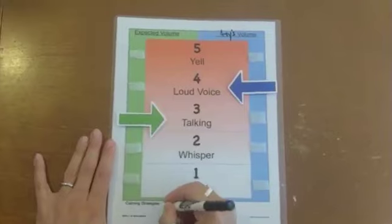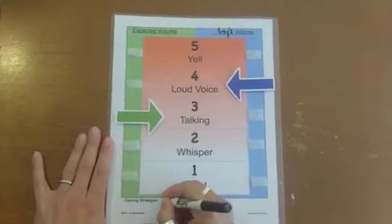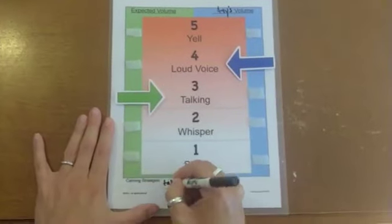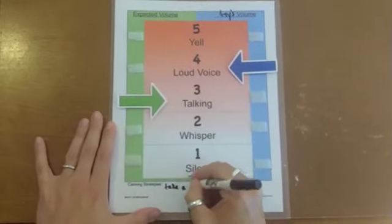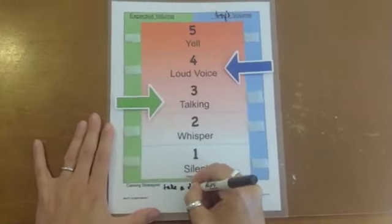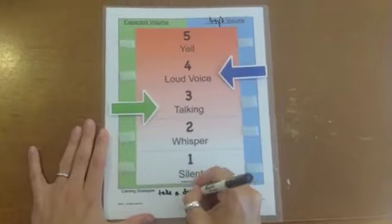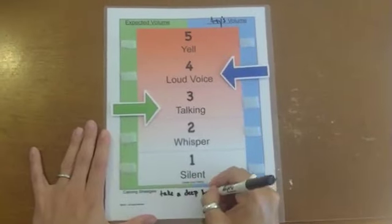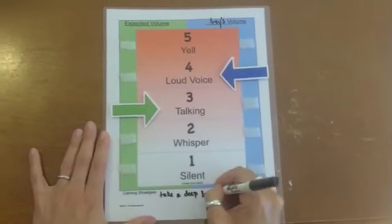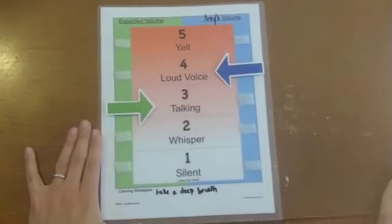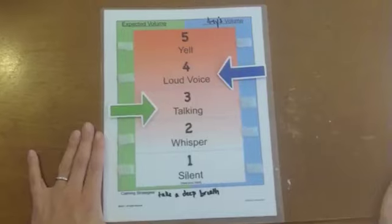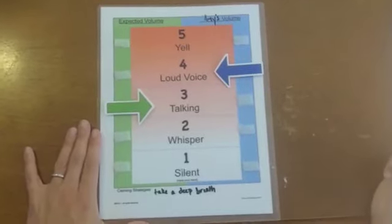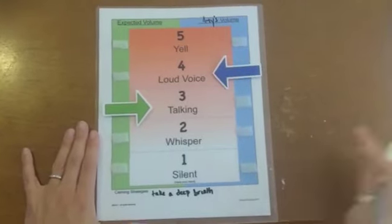An additional recommendation for personalization of the volume meter is to list several individualized calming strategies for a student at the bottom of the support, so that they can be encouraged to utilize these in an effort to reduce their arousal level and thereby reduce their vocal volume if needed.